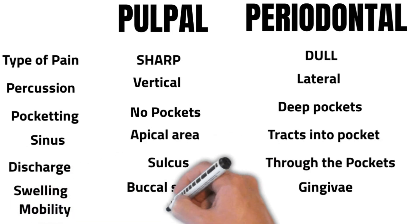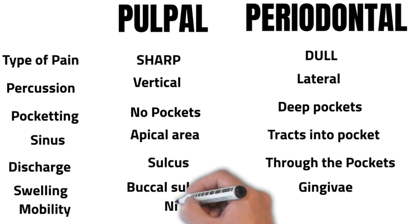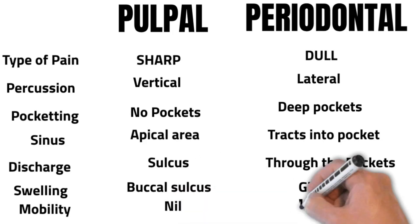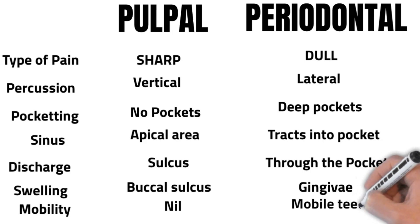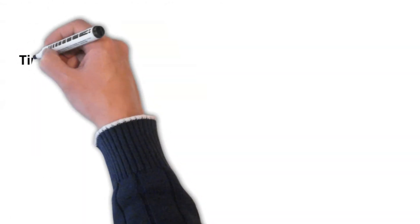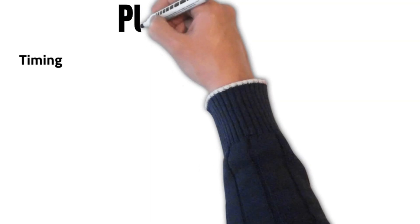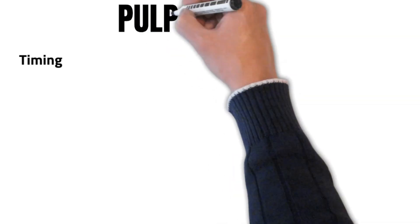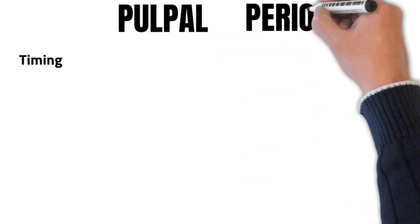There is usually no mobility present in pulpal pathology, whereas in periodontal pathology there can be mobility present in the tooth. In terms of timing, the pain usually precedes the swelling in pulpal pathology,